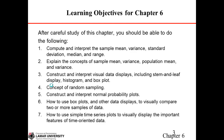The learning objectives for this chapter are as follows. First, we want to be able to compute and interpret the sample mean, sample variance, standard deviation, median, and mode. We also want to learn how to explain the concept of sample mean, variance, population mean, and population variance. We will construct and interpret visual data displays including stem-and-leaf, histogram, and box plot. We also want to introduce the concept of random sampling and interpret normal probability plots, and use the box plot to visually compare two or more samples of data. Finally, we want to learn how to use simple time series plots to visually display the important features of time-oriented data.